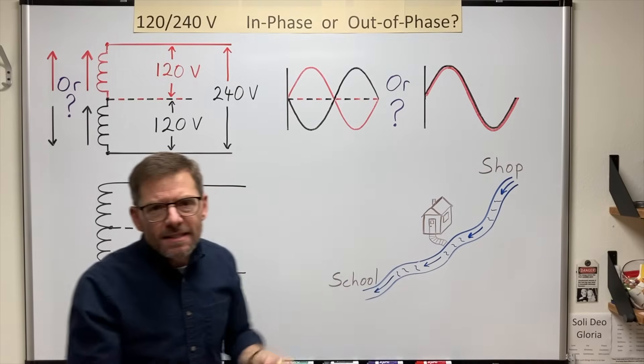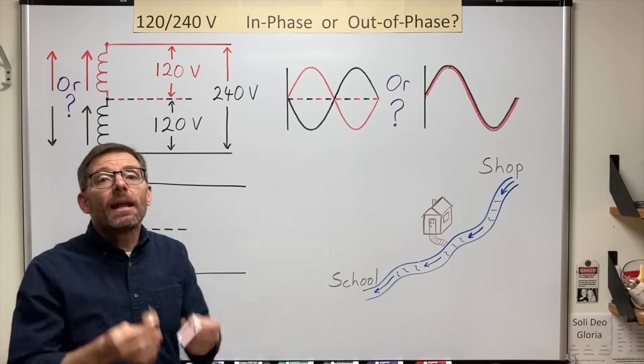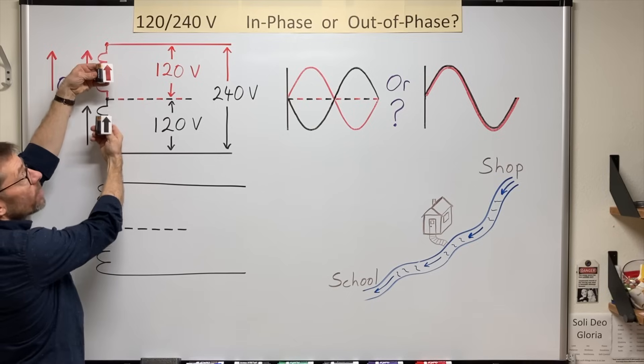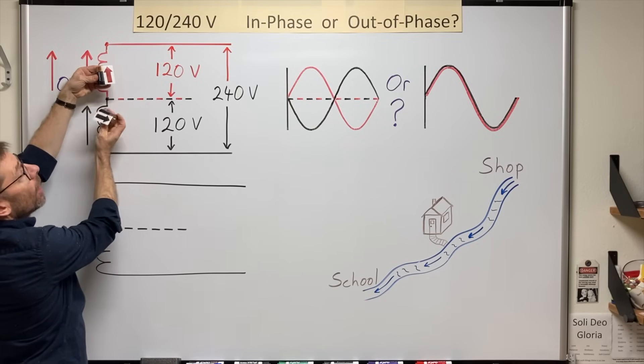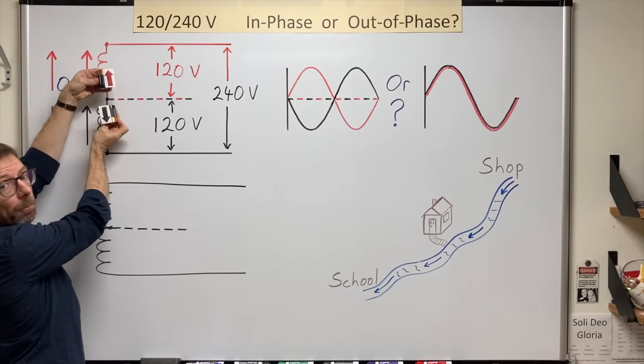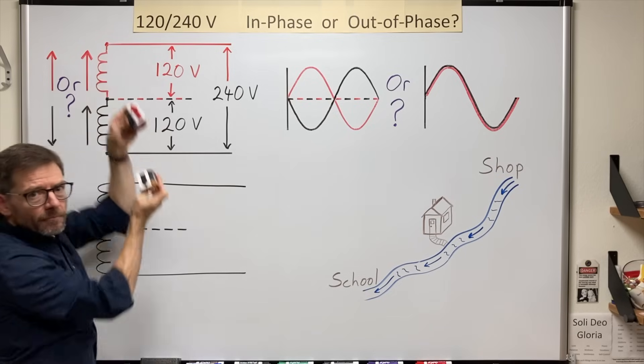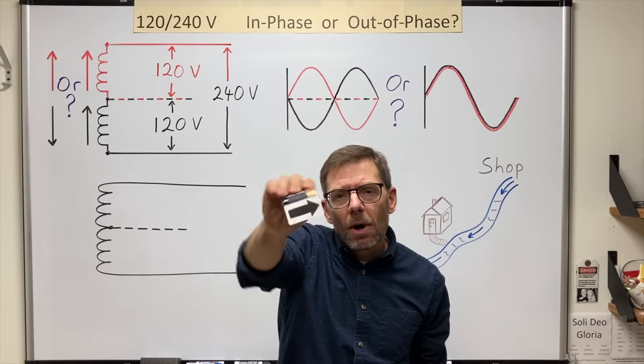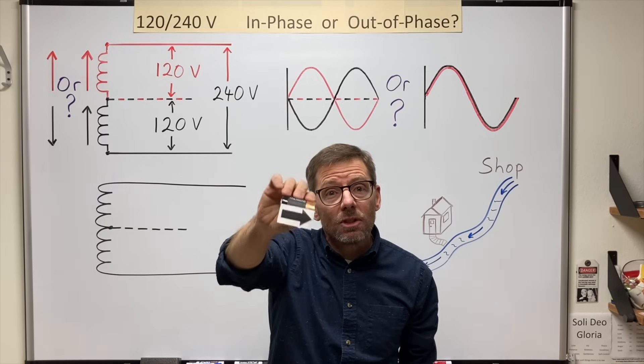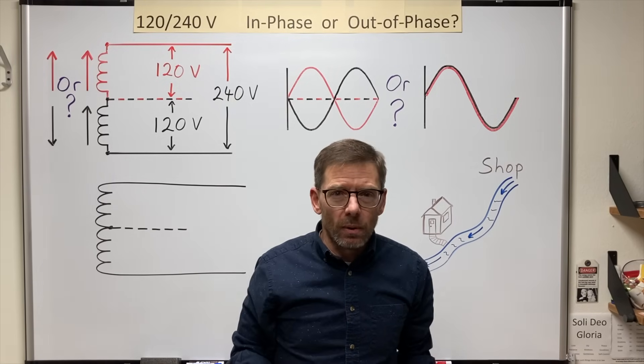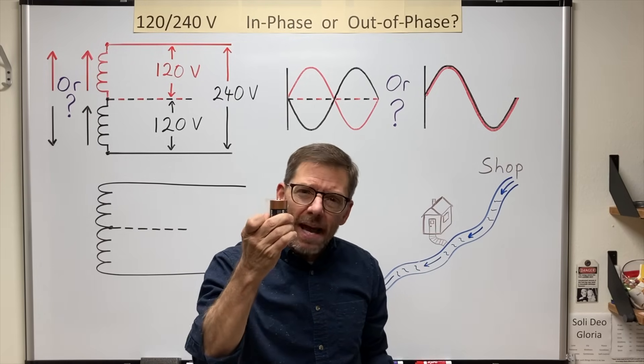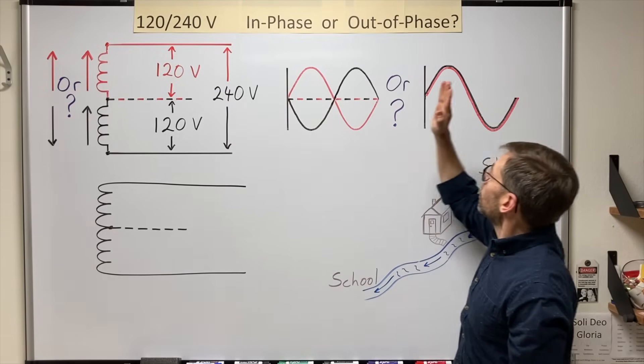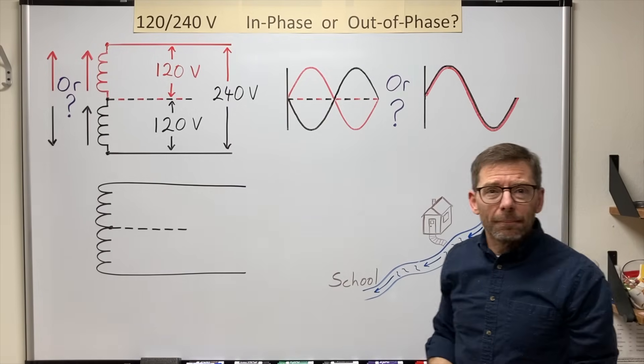One last thing I want to do before we go to the board is since I'm going to be using batteries, I want us to recognize that DC batteries can be used to simulate two sources that are either in phase with each other working together or 180 degrees opposing each other.